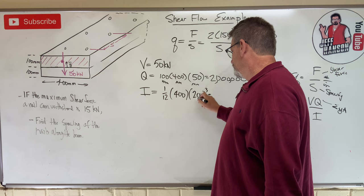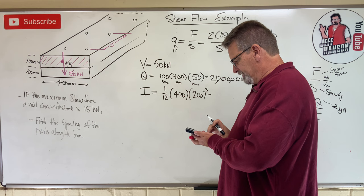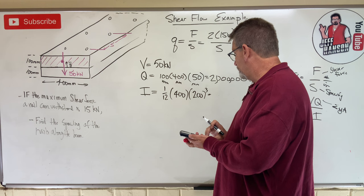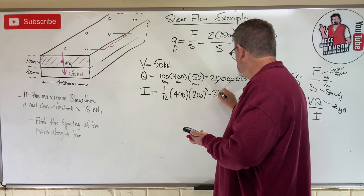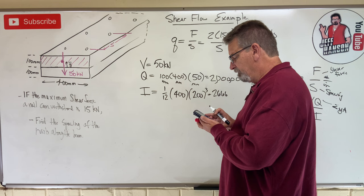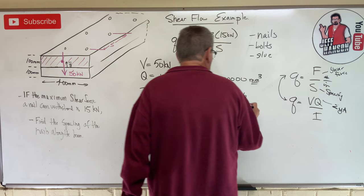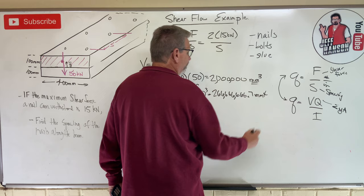Let's see, 400 times 200 cubed divided by 12 equals 266,666,666.7 millimeters to the fourth.